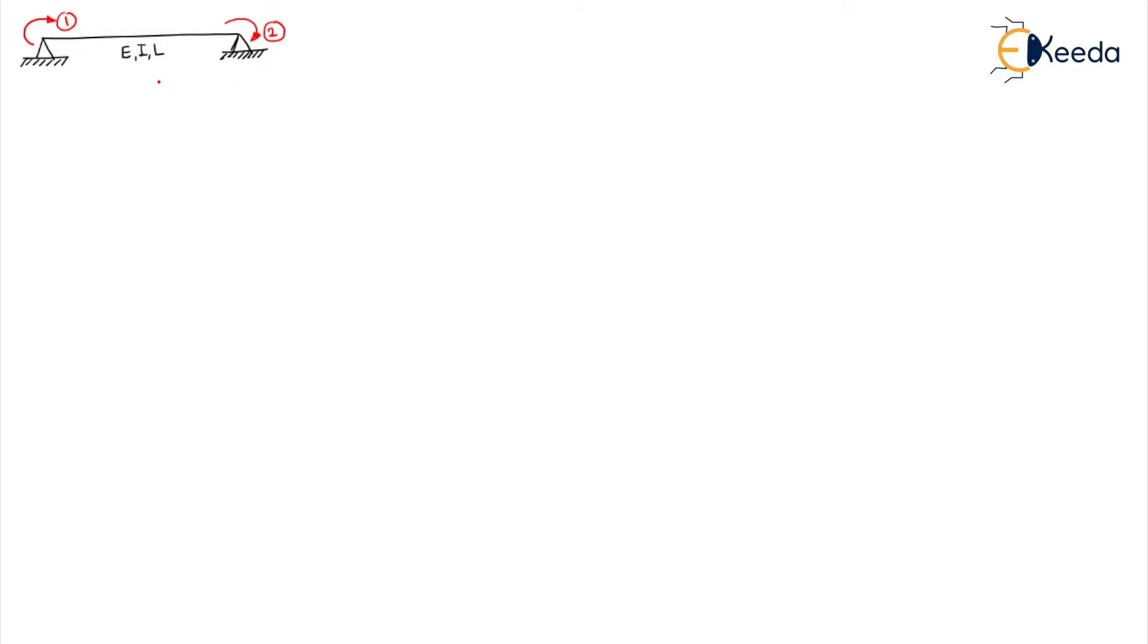In this lesson, let us solve the third problem of development of stiffness matrix. The problem given to us has two coordinates and two hinges like this. I call this hinge A and this hinge B. Since there are two coordinates, you can assume there are two degrees of redundancy.